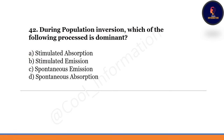During population inversion, which process is dominant? Option A: stimulated absorption. Option B: stimulated emission. Option C: spontaneous emission. Option D: spontaneous absorption. Correct option is B — stimulated emission is dominant during population inversion.